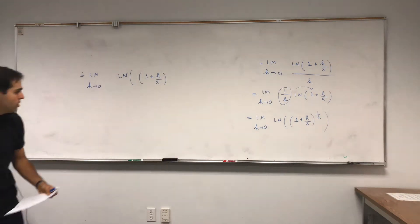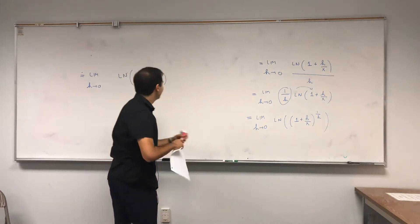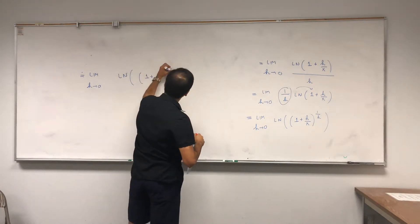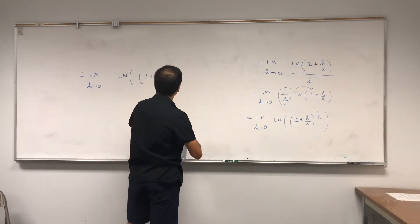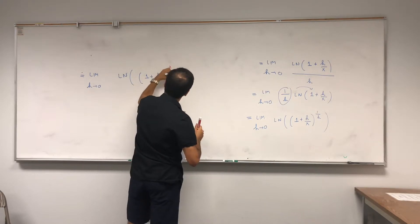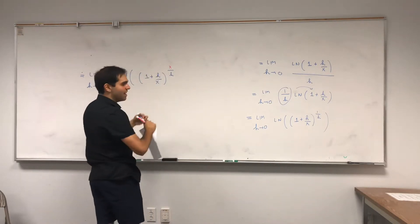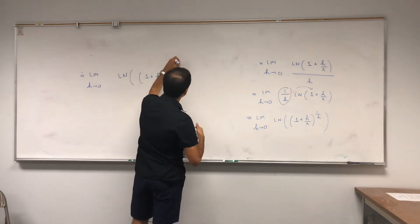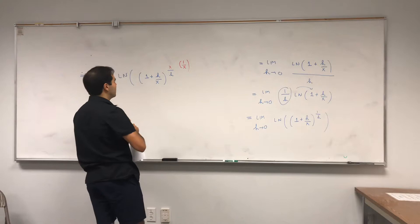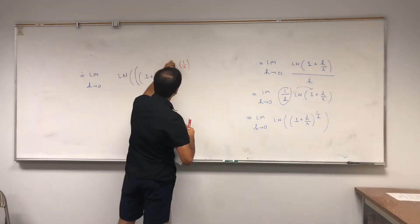Oh there's my marker, sorry I'm confused for a second. So x over h. To get rid of that x you have to exponentiate by 1 over x, so it's crazy, it's like a triple exponentiation.